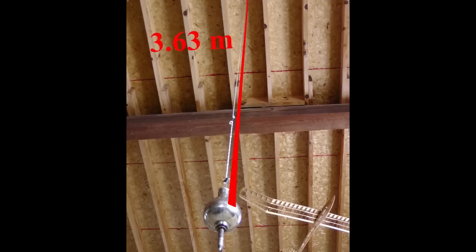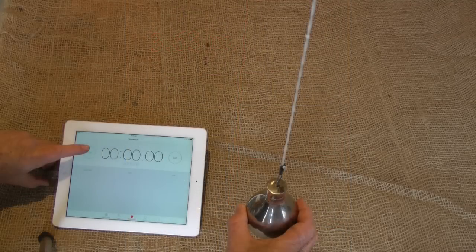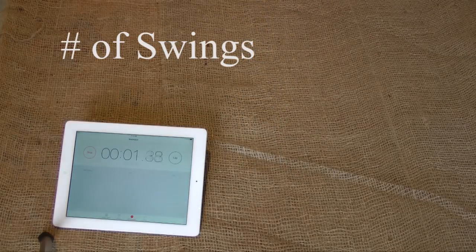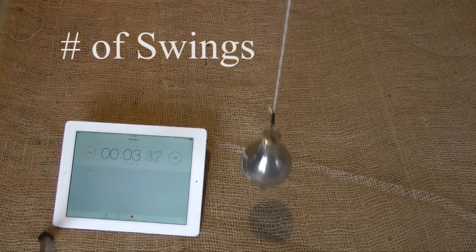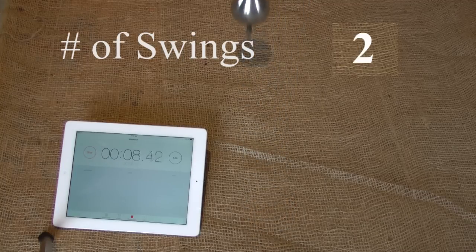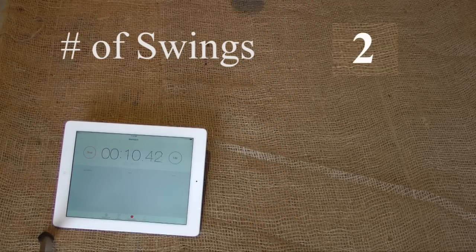I'll use this timer to determine the interval for 10 complete swings. A long pendulum like this has a large period. This helps when timing. Any small errors aren't as significant.